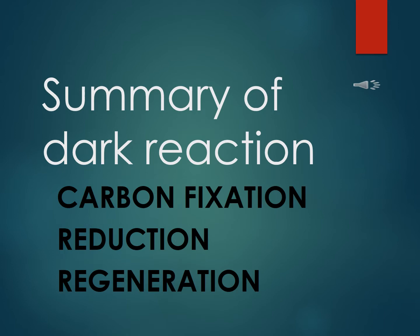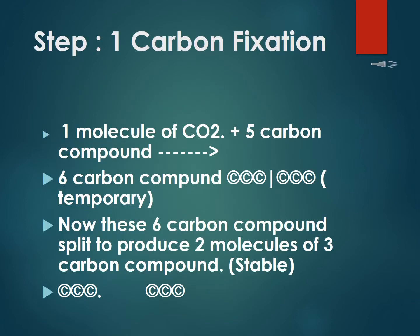There are three phases of dark reaction. Number one is carbon fixation, second is reduction, and the third one is regeneration. Let's discuss these three phases of dark reaction. Step number one is carbon fixation: carbon dioxide coming from the environment enters inside the plant cell.